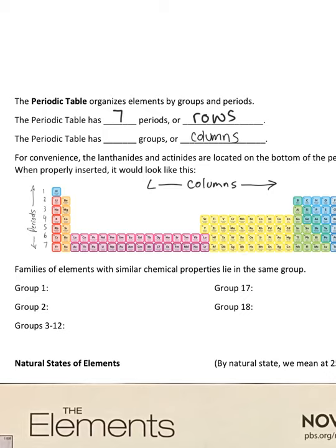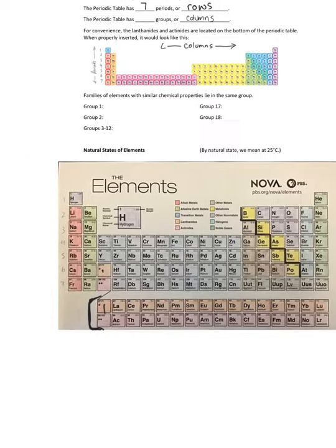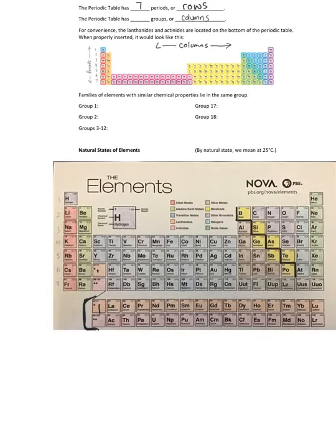For convenience, most of the time we just don't put them on there. If you look up any periodic table, it'll normally just have them excerpted and down at the bottom for convenience. When we're talking about groups, we really only count the groups on a traditional periodic table.